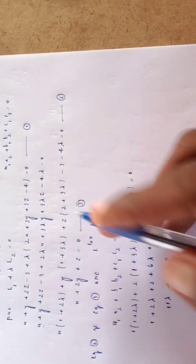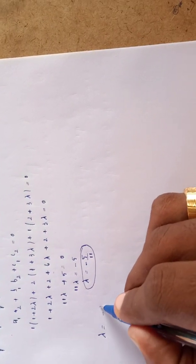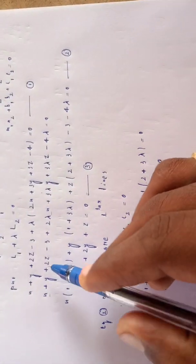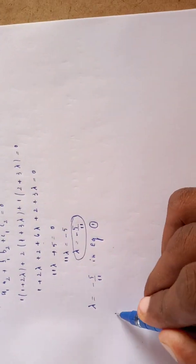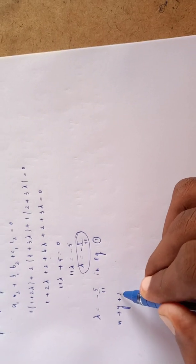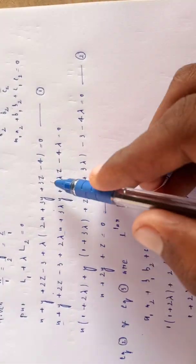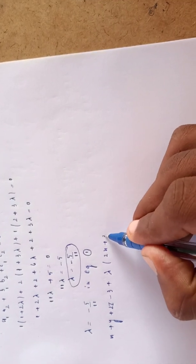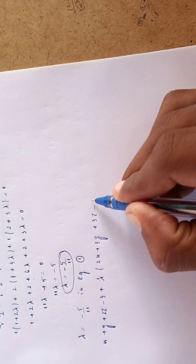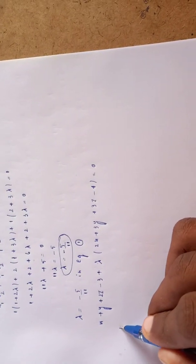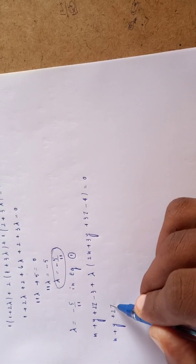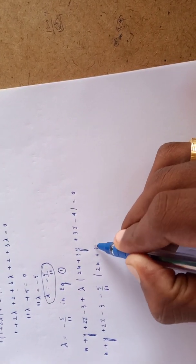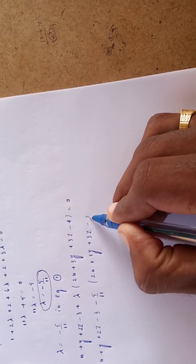Substituting λ = -5/11 into equation number 1: (x+y+2z-3) + (-5/11)(2x+3y+3z-4) = 0. Multiplying through by 11: 11(x+y+2z-3) - 5(2x+3y+3z-4) = 0.